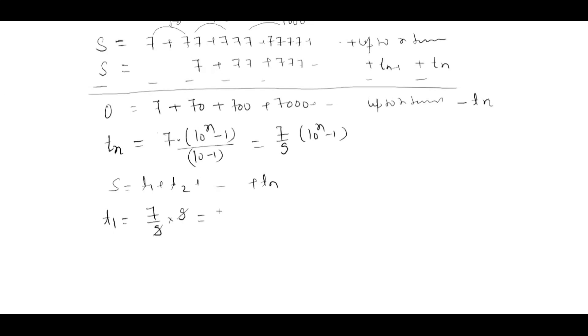Let's take t_2. That will be 7 by 9 times 10 to the power 2 minus 1, which is 7 by 9 times 99. This is gonna be 77, so that's also correct. You can check the other ones as well.